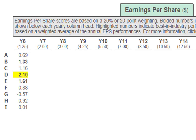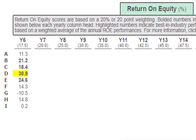Moving down to return on equity — same concept, whichever is highlighted is number one. Company D again, with teams E at 24, B at 21, and C at 18 all meeting expectations and therefore bolded. Looking down for concerns: Company G at negative 10.5 is worrying, and there seems to be a trend. But I'll hold back those concerns and wait until the next year. Company H is at 14, which is fine, and Company I is at 0.2 — not negative, but not very positive either.